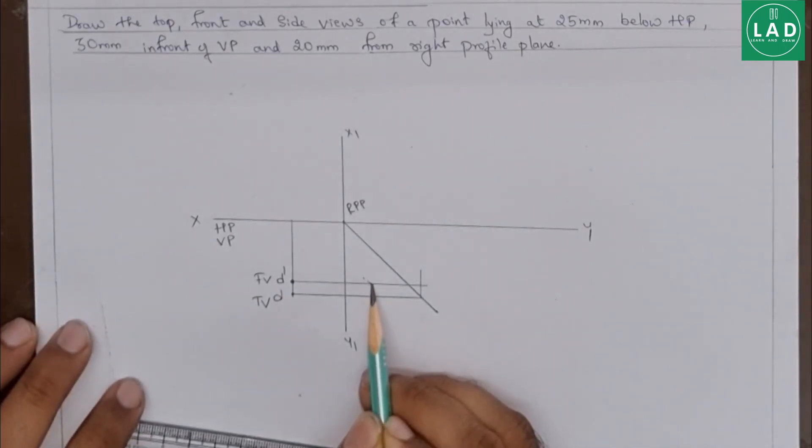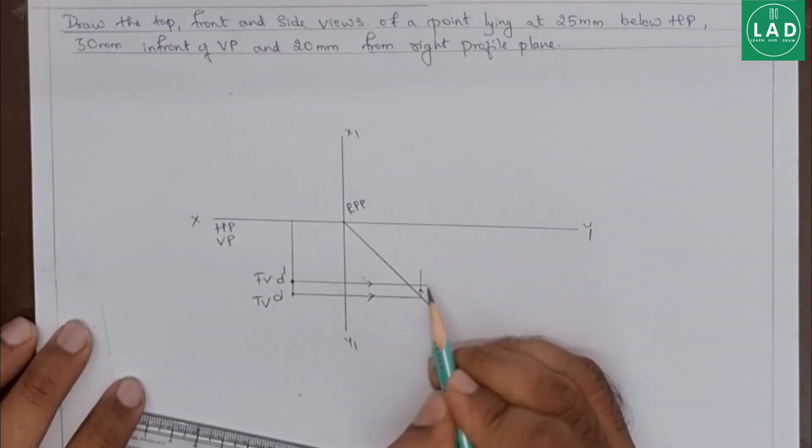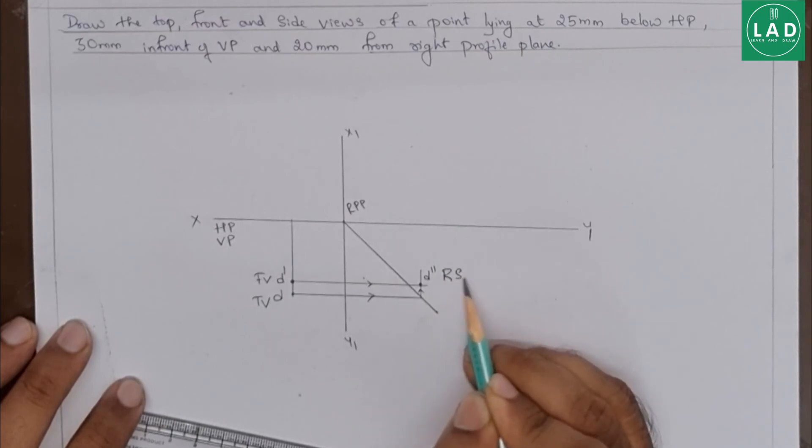Now, let's name the directions. This point is D double dash and this is our right side view.